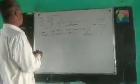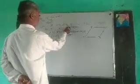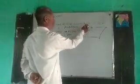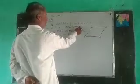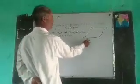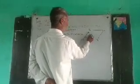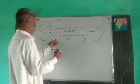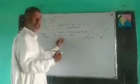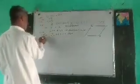Dear students, we are going to solve the question: if each pair of opposite sides of a quadrilateral is equal, then it is a parallelogram. We have a quadrilateral ABCD with AB equal to CD and AD equal to BC. We have to prove that ABCD is a parallelogram. For this, the construction step follows.